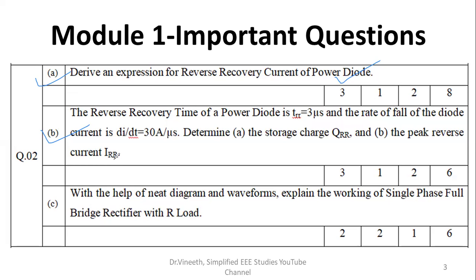With a neat diagram and waveforms explain the working of single phase full bridge rectifier with R load, pure resistive load. So here what you are supposed to do is we require circuit diagram, working during positive and negative half cycles, then waveforms - input voltage, output voltage, input current, output current. Those waveforms also you are supposed to mention.